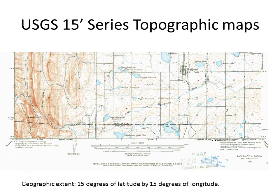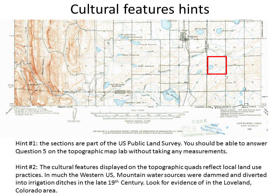Another series that USGS produces is the 15-minute series topographic maps. This is a smaller scale map than the 7.5-minute series — the geographic extent is twice as large, covering 15 minutes of latitude by 15 minutes of longitude. The map you'll be working with, which is a historical map, is at a scale of 1 to 62,500. That's close to a map scale where 1 inch equals about 1 mile — a scale of 1 to 63,360 would be exactly 1 inch representing 1 mile.